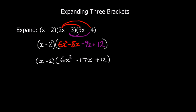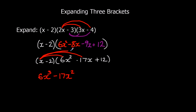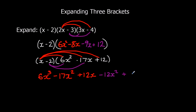Now we're going to expand these two brackets — x times all of them in the second bracket, and then negative 2 times everything. x times 6x squared is 6x cubed. x times negative 17x is negative 17x squared. x times 12 is 12x. Now negative 2 times 6x squared is negative 12x squared. Negative 2 times negative 17x: a negative times a negative is positive, 2 times 17 is 34, so plus 34x. And negative 2 times 12 is negative 24.